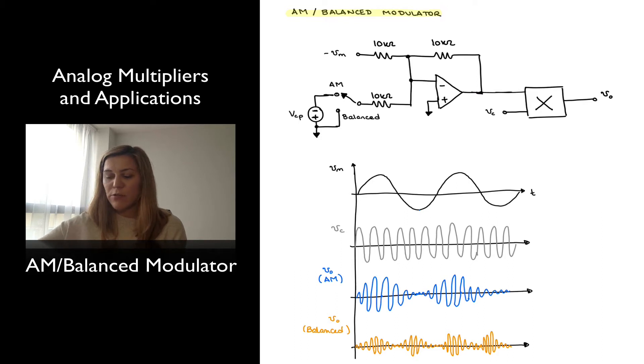Notice that the first stage of the circuit consists of an inverting summing amplifier, and then there is the multiplier which is performing the modulation. And notice that there is a switch that can be connected in either one of two positions.